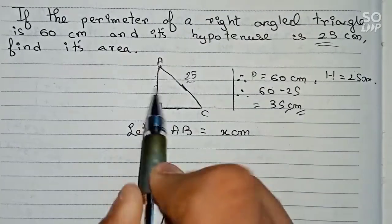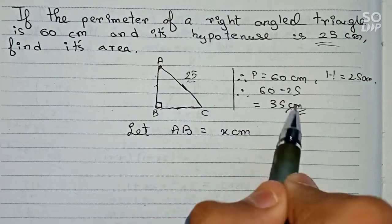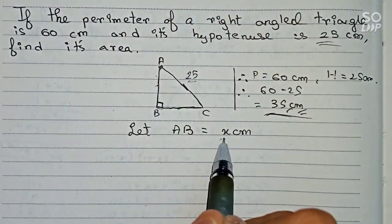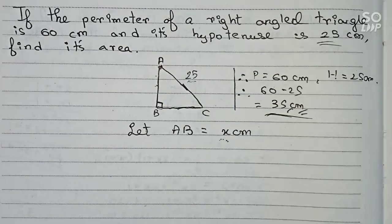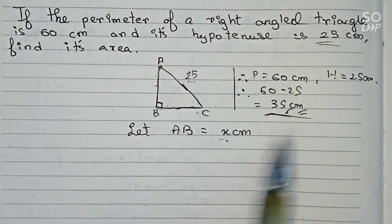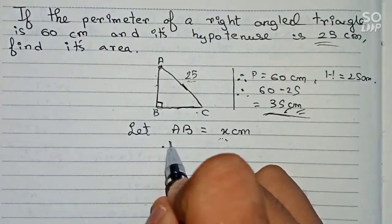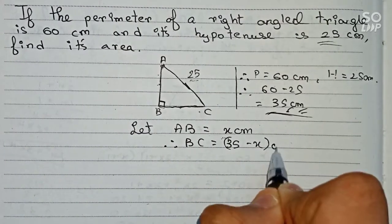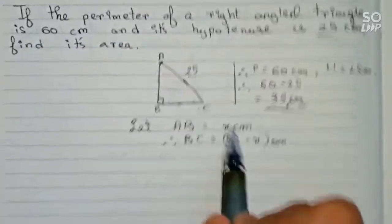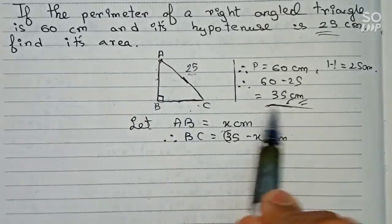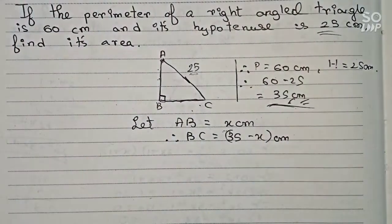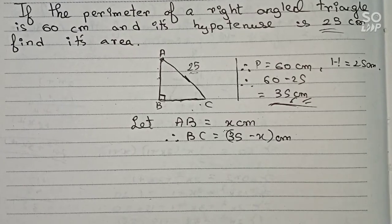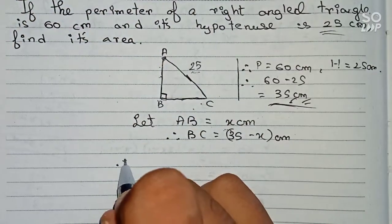So AB plus BC is equal to 35 centimeters. Since we have taken AB as x centimeters, BC will be 35 minus x centimeters.